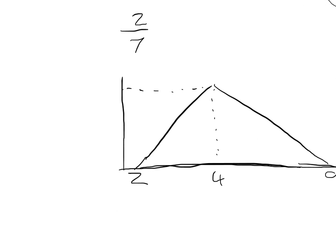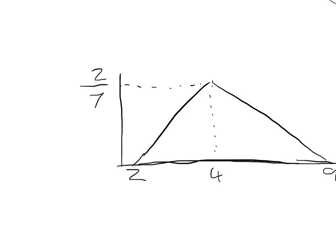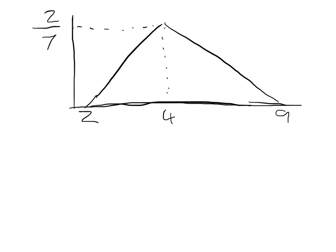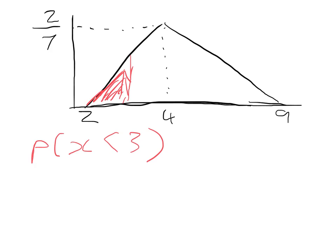The first question is: we want to find the probability that X is less than 3. The first thing I do whenever I get one of these is draw a diagram. I'm going to draw on this diagram and shade in the region I want to find. When X is less than 2, the probability is zero, so we only care about the area where X is less than 3. We're going to create a triangle.